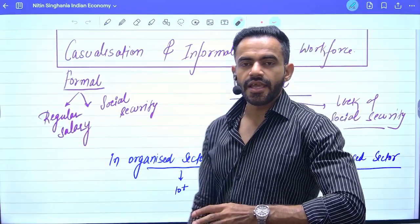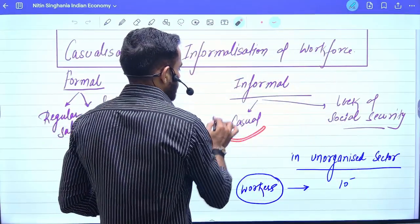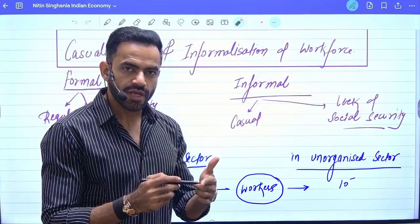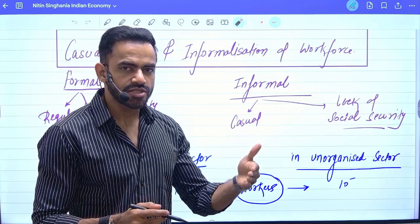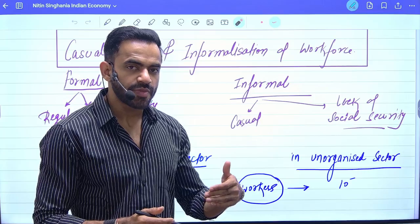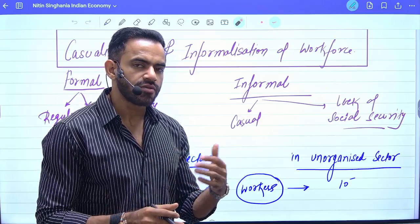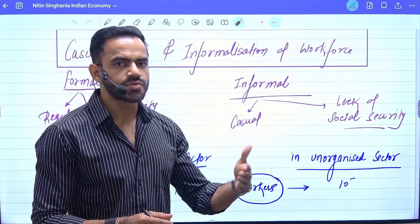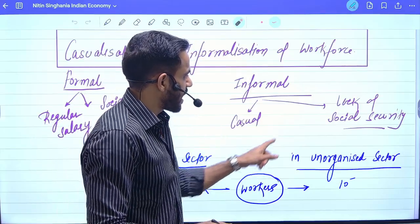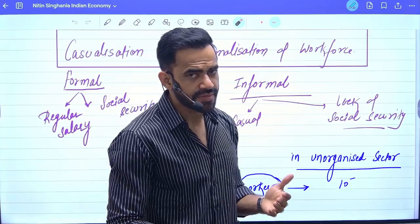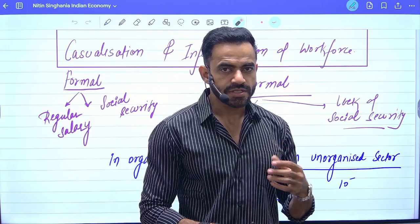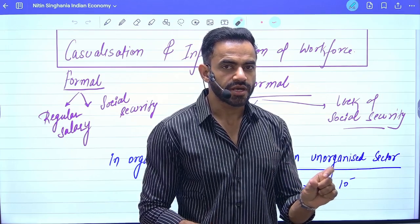On the other hand, informal sector workers are actually casual workers. Casual worker means if I go to work today, I will get paid — my salary is not on the basis of the month, it is daily, based on the work done. There is no fixed monthly payment. That is casual workforce. Second, there is a lack of social security benefits. If I won't go to work tomorrow because of illness, my payment will be deducted.